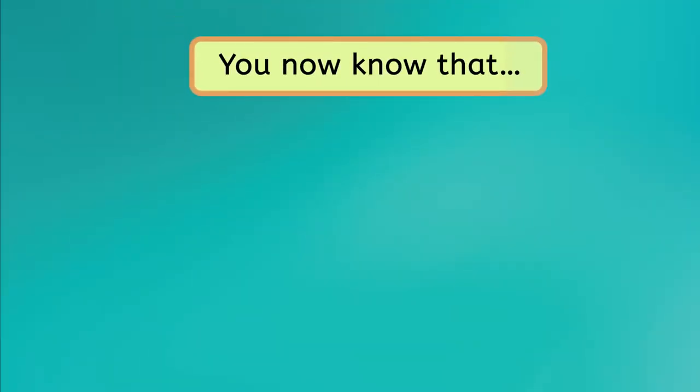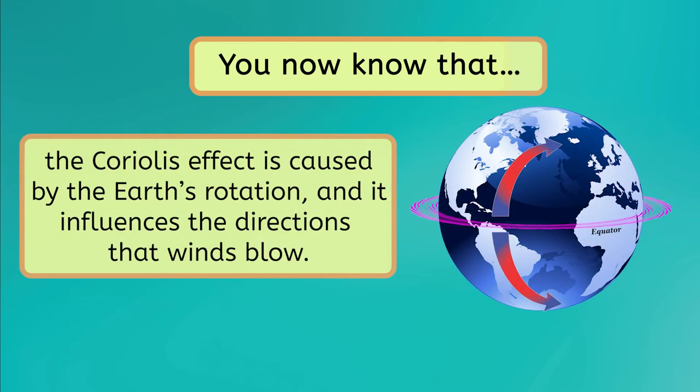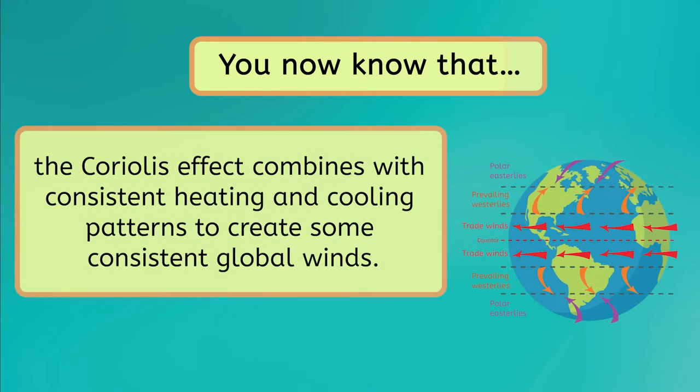So let's review what we learned today. Now you know that wind is caused by convection, which results in warm air rising and cold air sinking. The Coriolis effect is caused by the Earth's rotation, and it influences the directions that winds blow. And the Coriolis effect combines with consistent heating and cooling patterns to create some consistent global winds, known as the polar easterlies, the prevailing westerlies, and the trade winds.